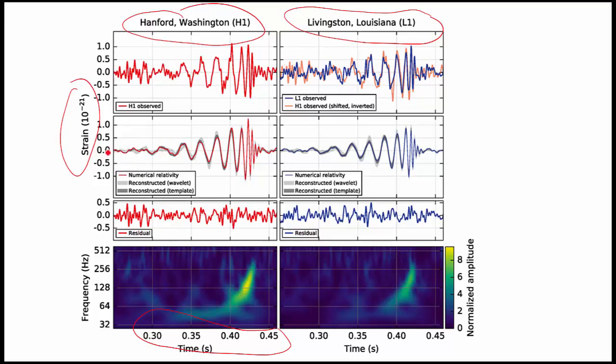And here we're comparing the data, the grey, with the theoretical model from general relativity and you can see they match up very precisely. Down the bottom we can see frequency in Hertz against time and you can see it starts off at about 40 or 50 cycles per second and goes up to over 200 in both cases before fading out.